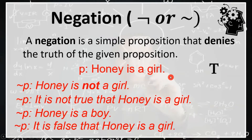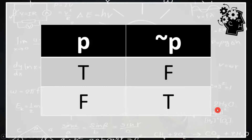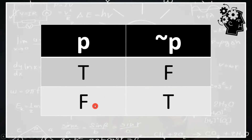If our given proposition is true, then when we negate that proposition, it becomes false. A truth table represents the relationship between the truth values of propositions and compound propositions formed from those propositions. Since a negation denies the truth of the given proposition: when a proposition is true, the negation is false; and when the proposition is false, its negation is true. Take note that it is a common mistake to assume that not-P is automatically false just because it involves a negation. However, not-P can be true, and this happens when the given proposition is false.